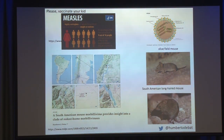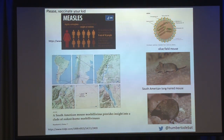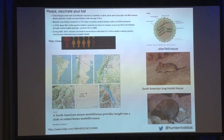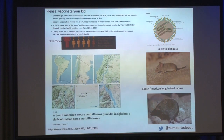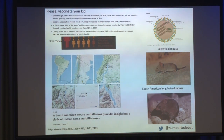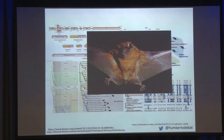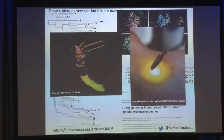Measles is one of the most contagious viruses there is. If you are infected and there are 10 susceptible people around you, nine of them will get infected if not vaccinated — compared to about three for COVID. Since the vaccine, deaths have dropped enormously, but in sub-Saharan Africa there are still 140,000 deaths each year, mostly in children under five, due to lack of vaccine access. We found that mice in the south of Argentina and Chile have viruses related to measles. We're also working with bats in Panama, fireflies, and mosquitoes.